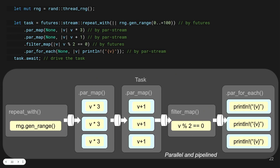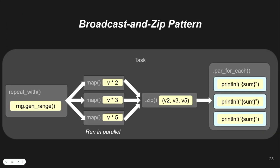Let me give another example: a numerical computation task. I have a random number generator. The operations are: multiply all numbers by 3, then add 1, then filter to keep only even numbers, discard odd ones, then print them. Imagine writing this with loops. In my framework it's very simple — each step becomes one line. The first is `repeat` (random generator), then a parallel multiplication by 3 (write it once, not three times), then the add-1 step similarly.